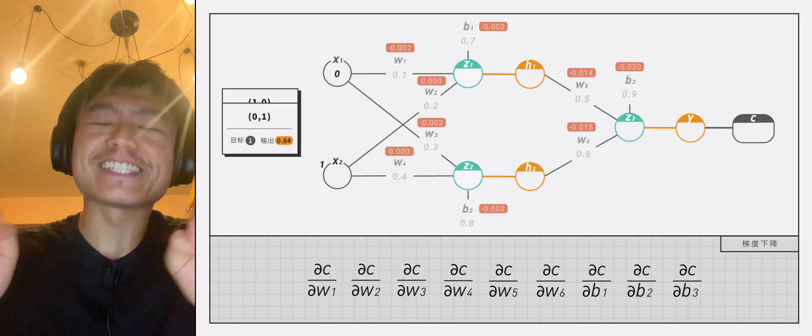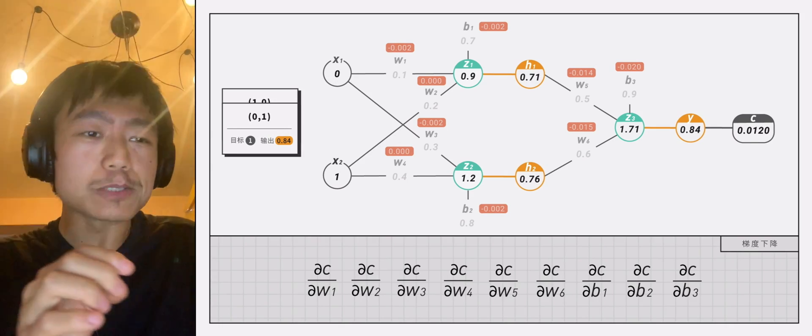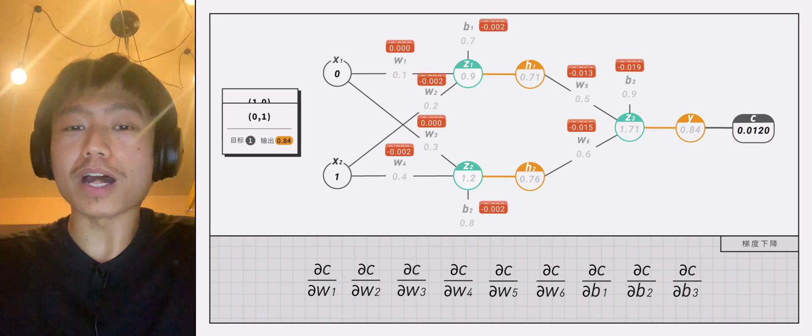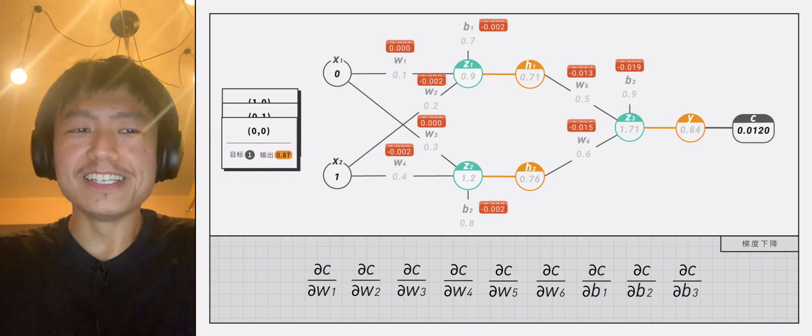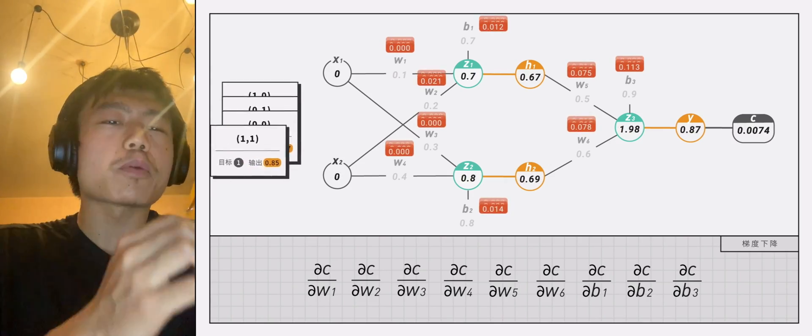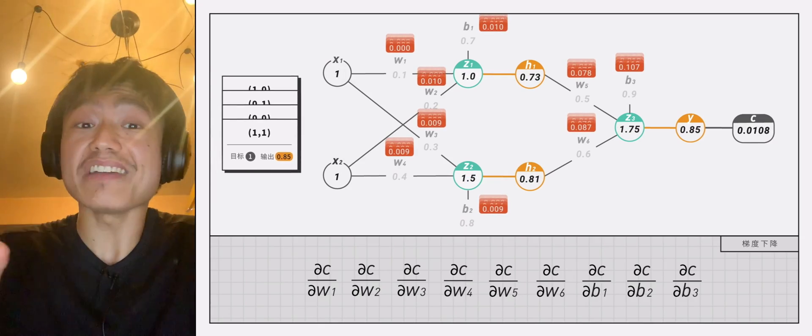But we have to enter the next data point, x1 equals 0, x2 equals 1, Y equals 1. Then we calculate the partial derivatives of nine variables.